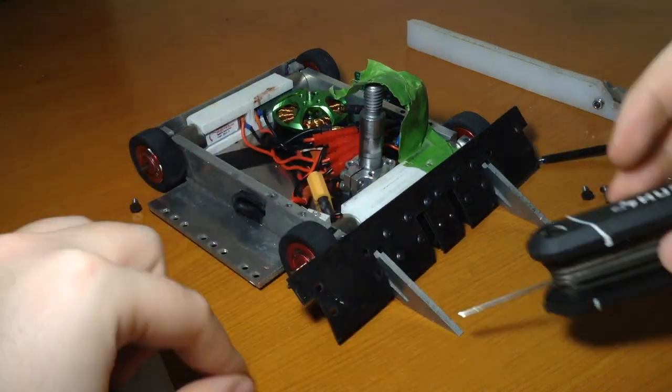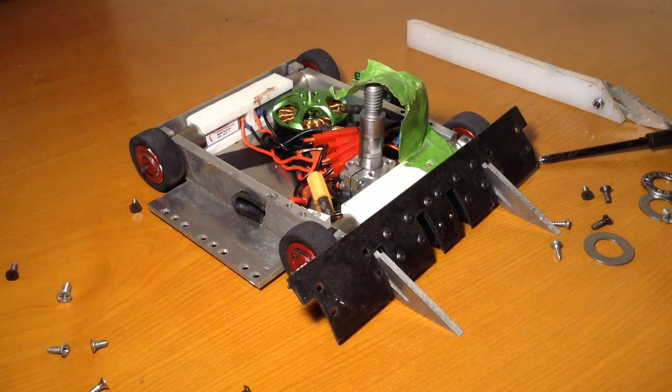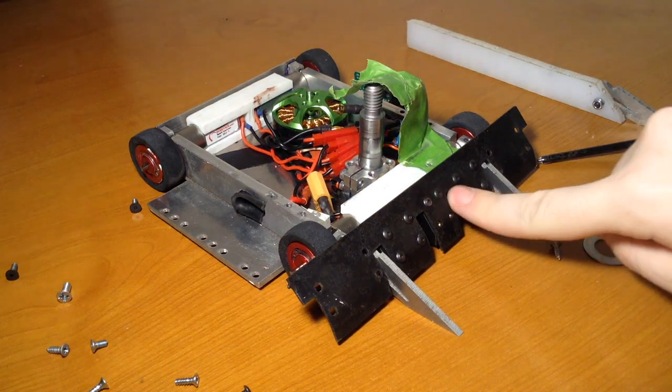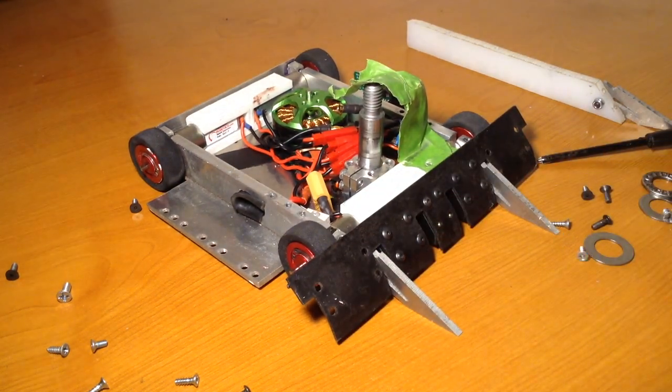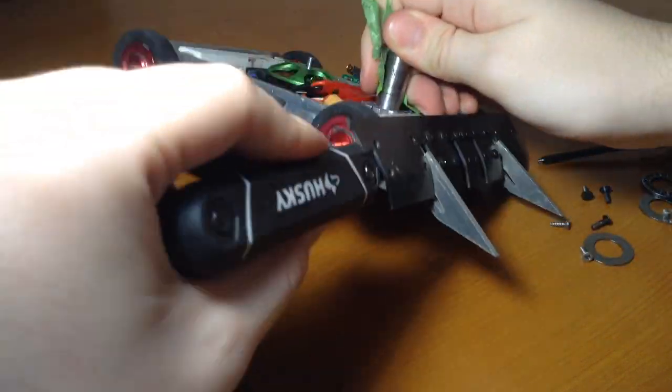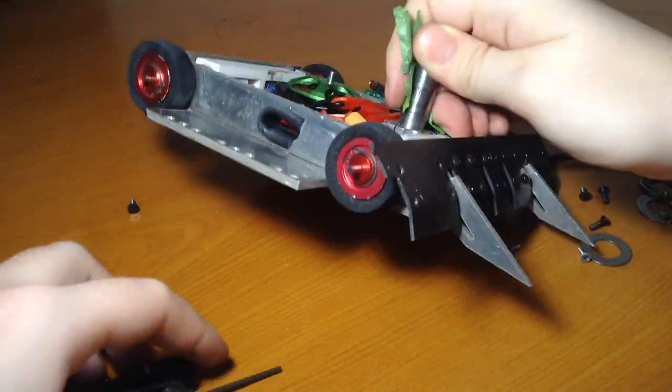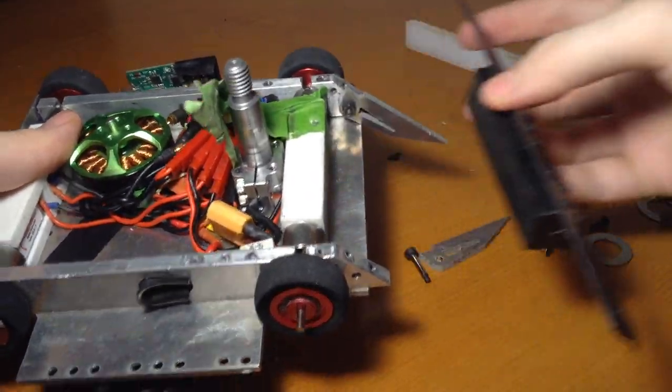Behind this fork wedge is actually a 3D printed part which helps double support these interior forks. It also allows for even more forks to come out of the middle here if I want them to. So in order to get this all the way off, I also have to remove the shoulder bolts which come through here, and I can slide this out.